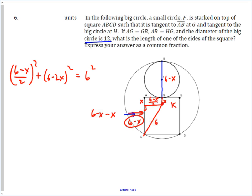If we apply the Pythagorean theorem, you're going to get 36 minus 12x plus x squared, all over 4, plus 36 minus 24x plus 4x squared equals 36. Notice the 36 is cancelled there, which makes life a little easier.